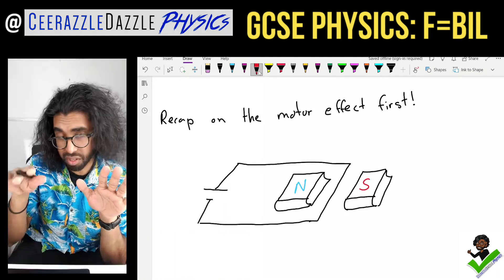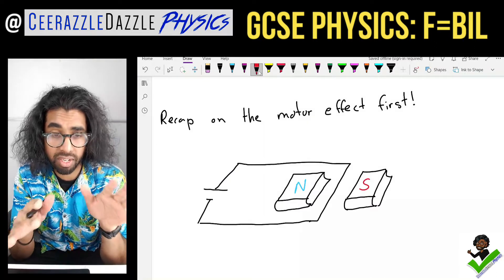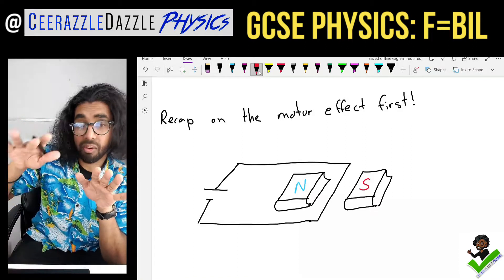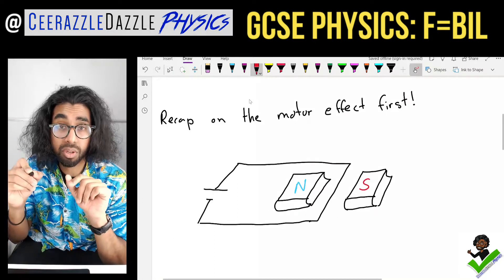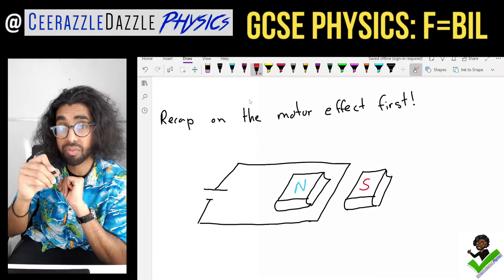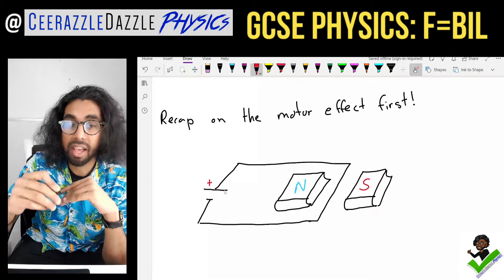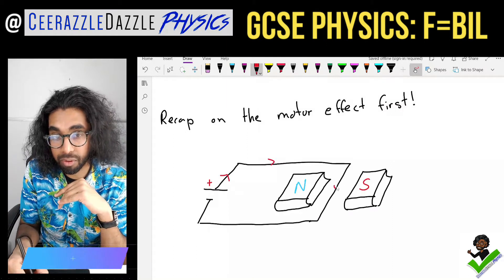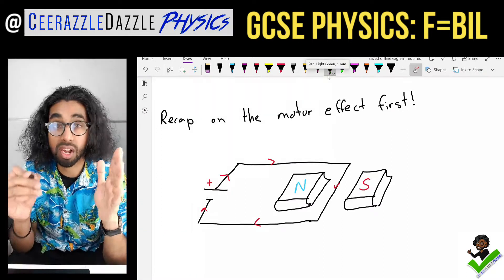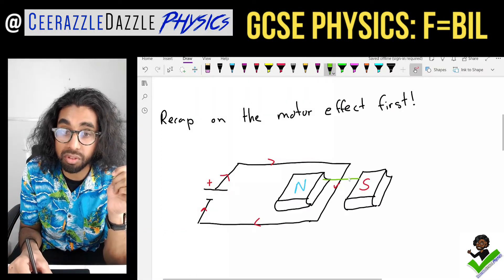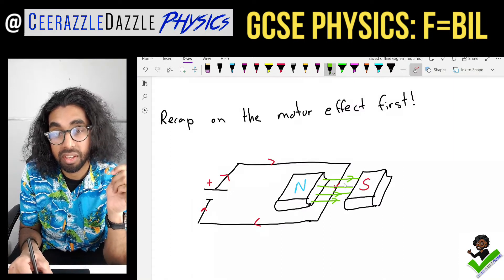Over here we've got a bar magnet — a north pole and a south pole — resting on a table. This is a 3D diagram. We've got a wire running within it. The current goes out of the positive terminal — the long one — and goes round the back through the wire. The field lines go from north to south.